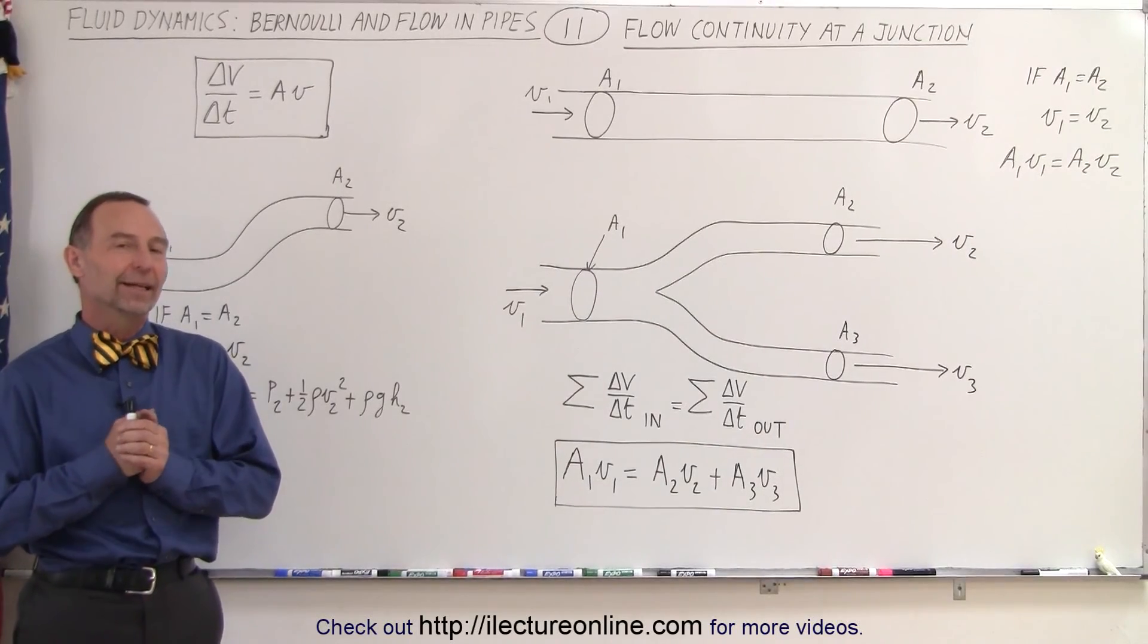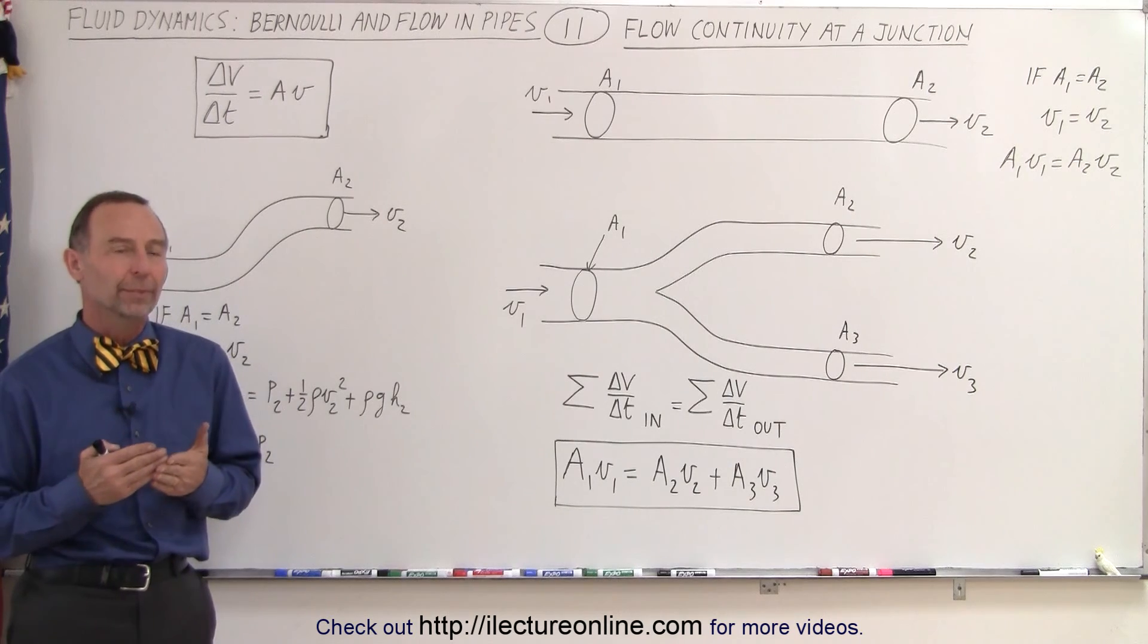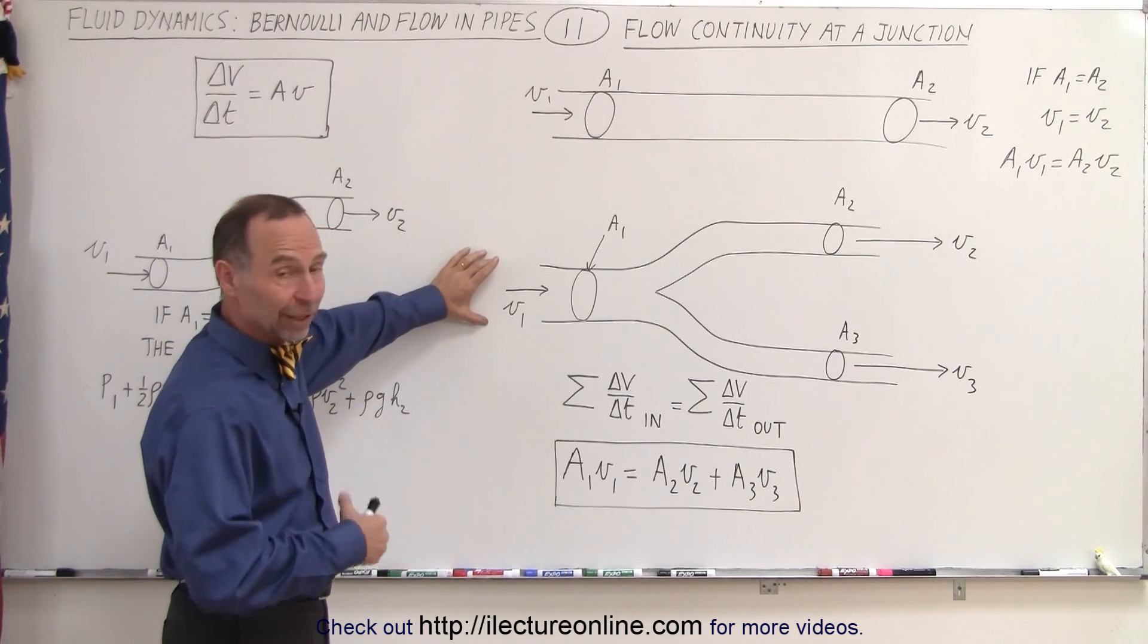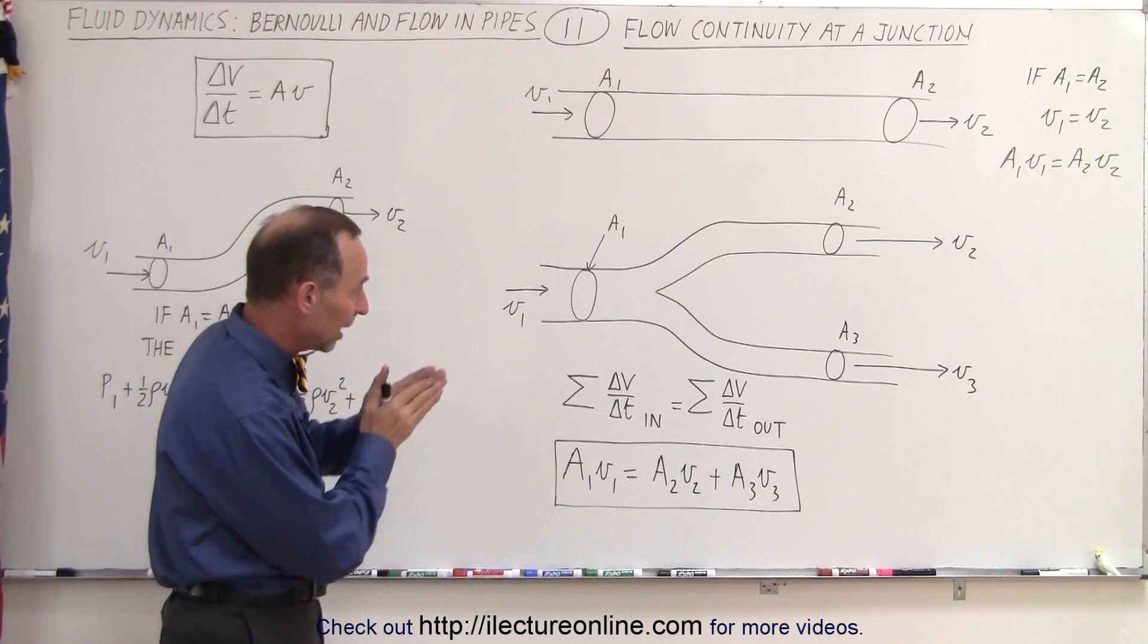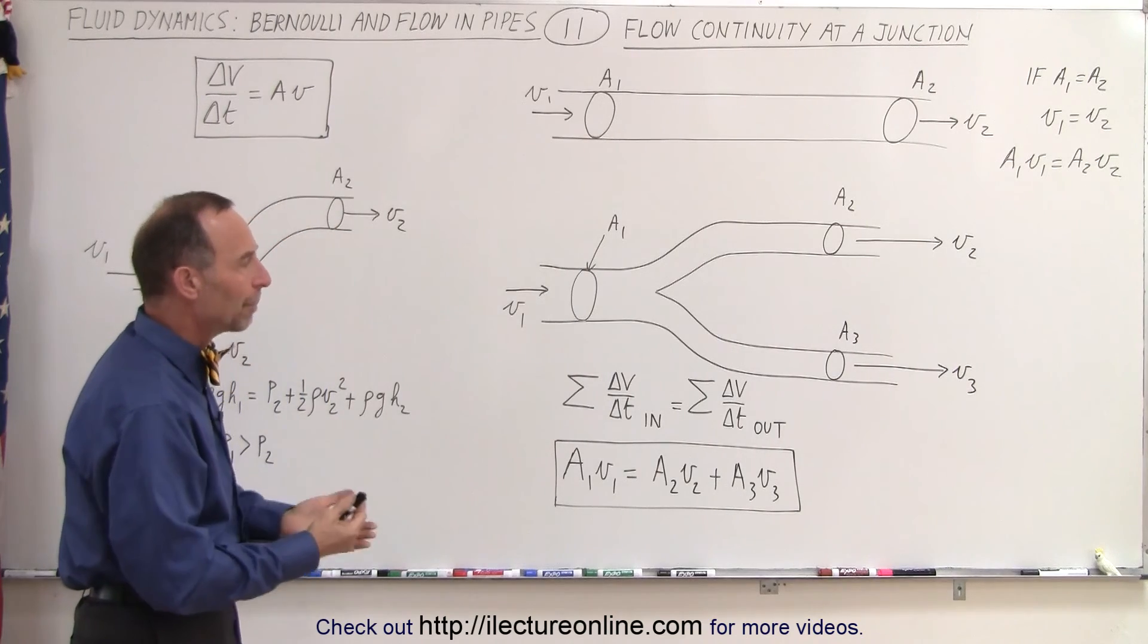Welcome to ElectronLine. Now let's tackle the situation where we have a junction in the pipe. We start from a place where we have a greater diameter and therefore a greater cross-sectional area. Now the pipe splits up into two or more smaller sections. What happens?